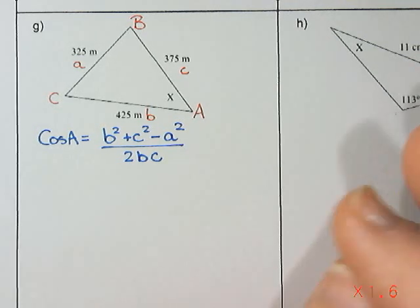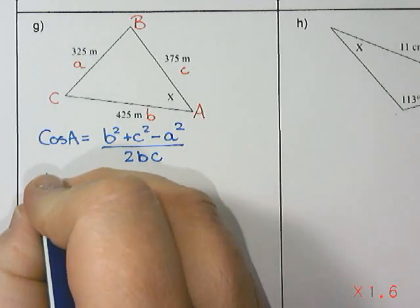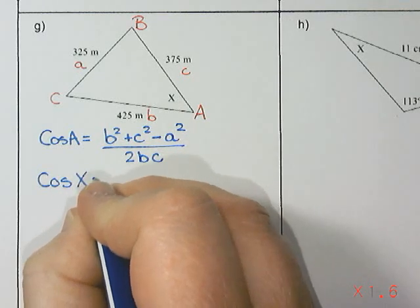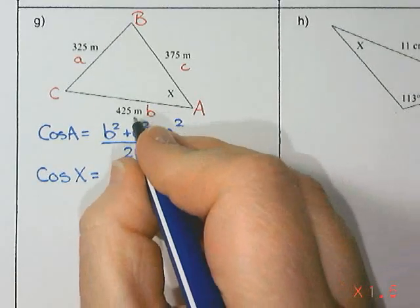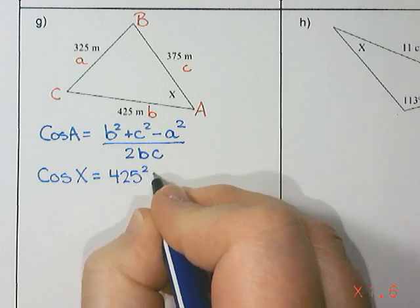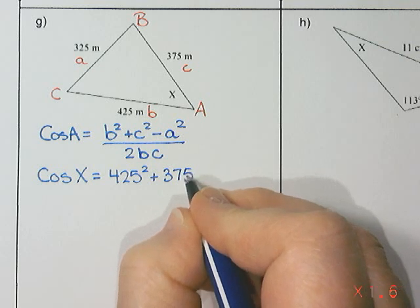We are going to substitute in all the things that we know. So I have cosine of angle A, so cosine of X equals B, so that's 425 squared, plus C, 375 squared,